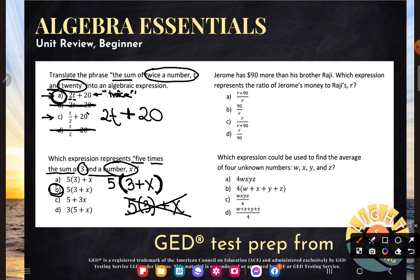Next one. Jerome has $90 more than his brother Raji. Which expression represents the ratio of Jerome's money to Raji's R? So don't panic at the sight of fractions. This one's not nearly as bad as it seems. Let's start with this language. Which expression represents the ratio? If they ask you to write a ratio, they're literally asking you to write a fraction. Don't worry, they're not asking you to add it. Just write it. We're capable of this, guys.